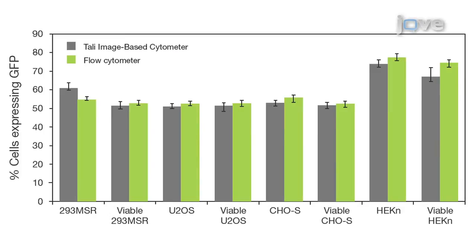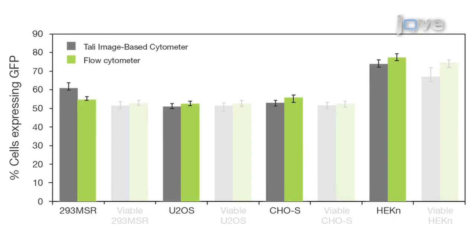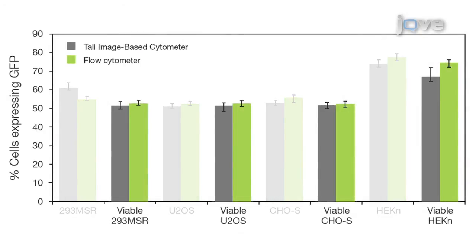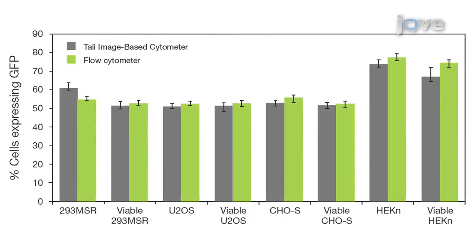Four representative cell types were transduced with a nuclear-targeted CellLight GFP viral construct, stained with the TALY viability kit using dead cell red reagent, and analyzed by both the TALY and a flow cytometer. Both methods reported approximately the same percentage of the population for each cell type that were expressing GFP, along with the percent of the total population that were both viable and expressing GFP. These data demonstrate that the TALY cytometer is capable of discriminating between total GFP expression in a population and GFP expression in the live population.